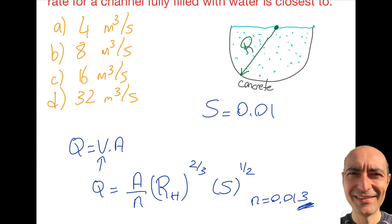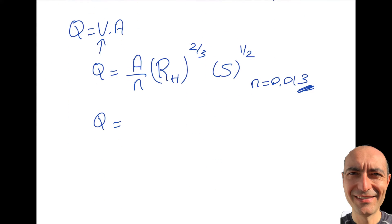Let's calculate A. If this was a full circle, I would get πR² as the area. Now I have half of it, so that will be πR²/2.